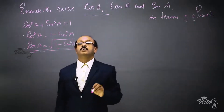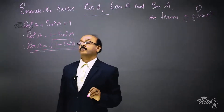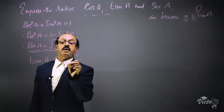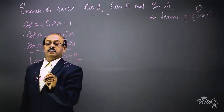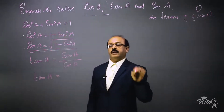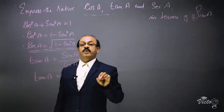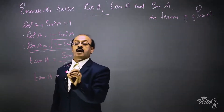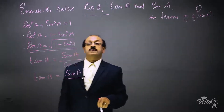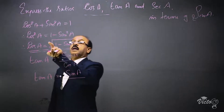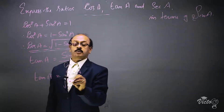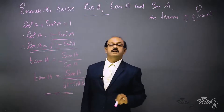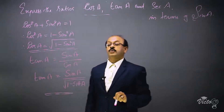The next one is tan A. Tan A = sin A / cos A. Since sin A is already in the numerator as required, we only need to replace cos A. Using the first result, cos A = √(1 - sin²A), we substitute to get: tan A = sin A / √(1 - sin²A).